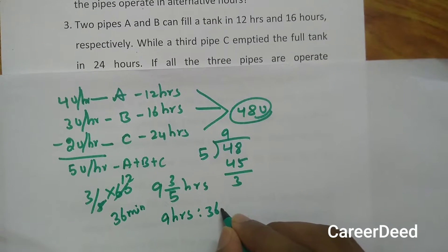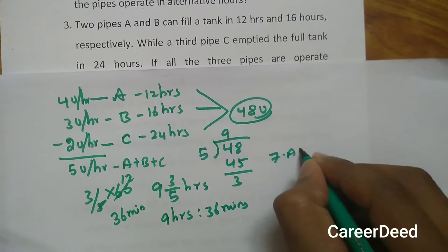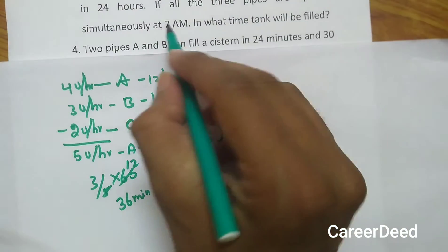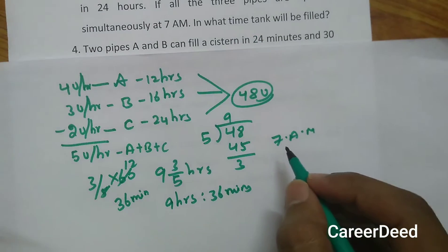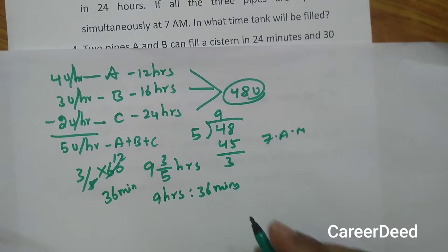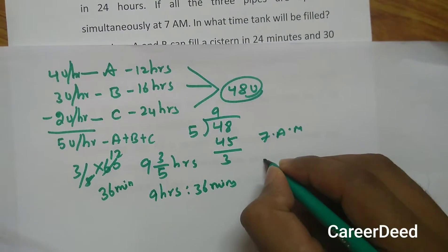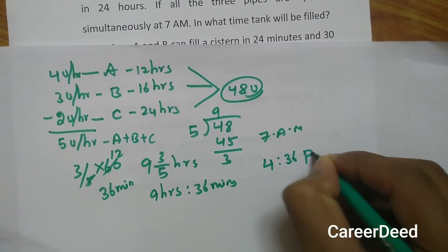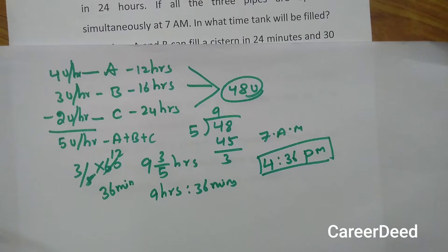Since all pipes started at 7 AM, adding 9 hours and 36 minutes gives us 4:36 PM as the exact time the tank gets filled.